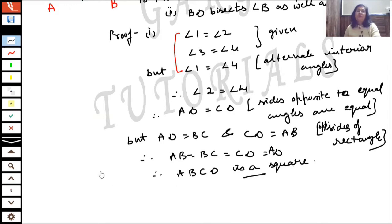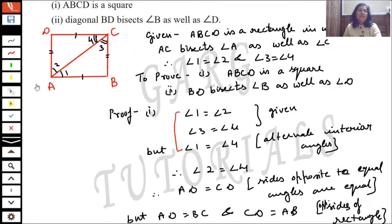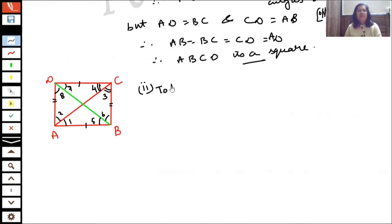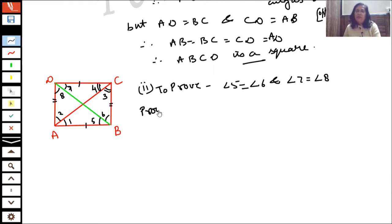That completes the first part. Now for the second part, we have to prove that BD bisects angle B as well as angle D. Let's draw another diagram. We need to prove angle 5 equals angle 6, and angle 7 equals angle 8.